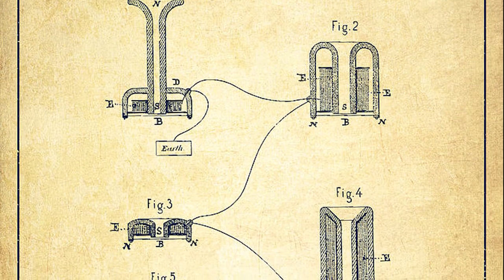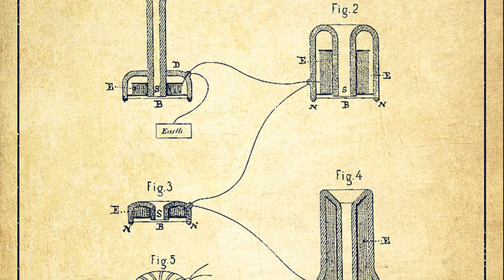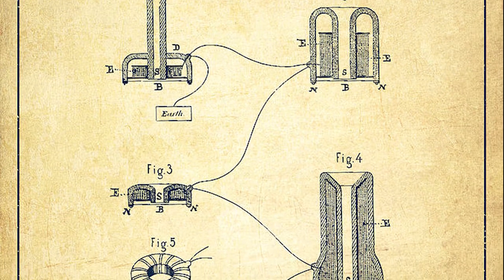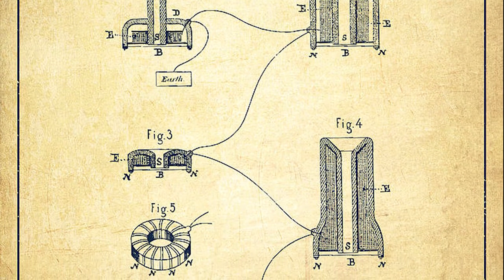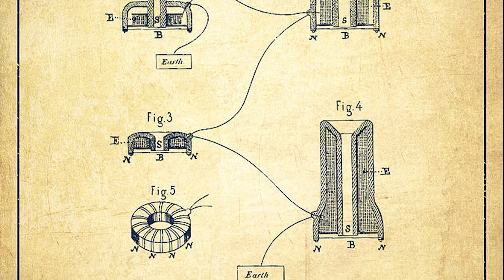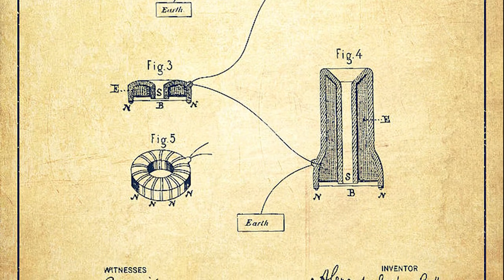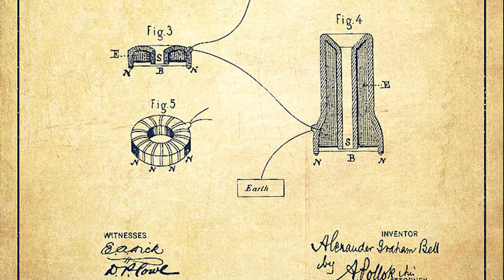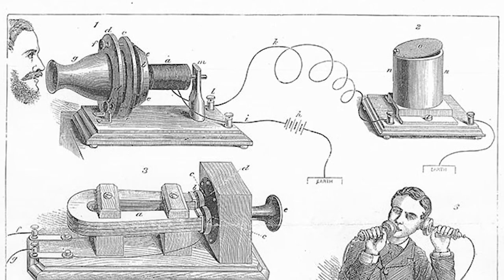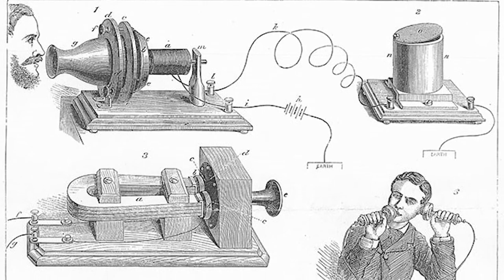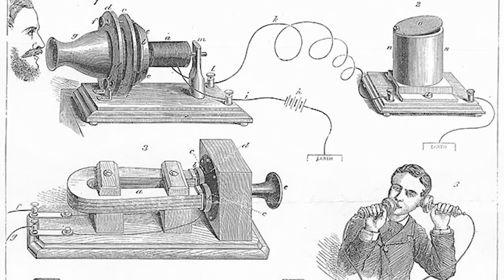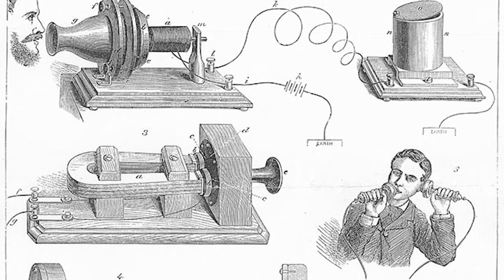Alexander attempted to sell the patent to Western Union, the world's biggest communication company at the time, for $100,000. Western Union declined, thinking that his telephone invention wouldn't amount to anything. Unfortunately for them, as you would have guessed, they couldn't have been more wrong. With Alexander keeping the patent to himself, he entered his telephone into the market and saw great success.